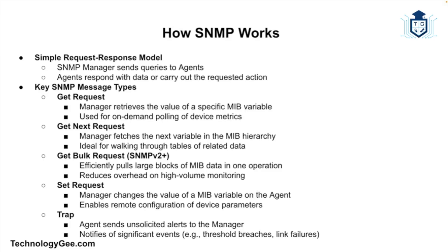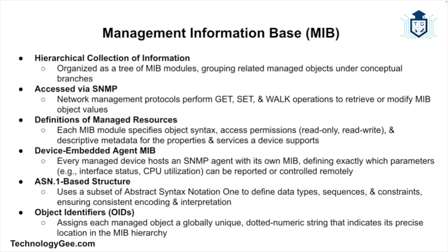The third message type is the Get Bulk Request, which retrieves large blocks of data and was introduced in SNMP version 2. The fourth is the Set Request, sent by the manager to set the value of a variable in the agent. The fifth is the Trap, an unsolicited message from the agent to the manager alerting about a significant event. These operations enable comprehensive monitoring and management of network devices.